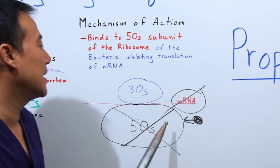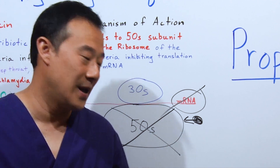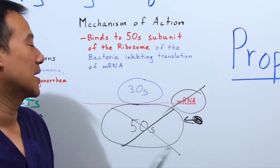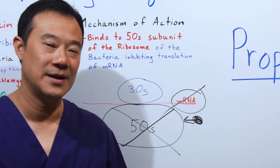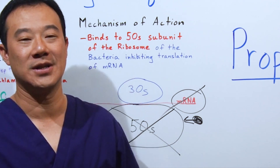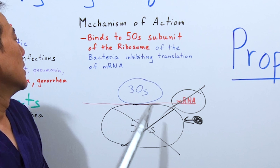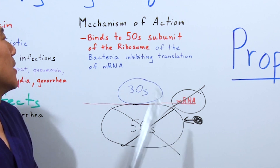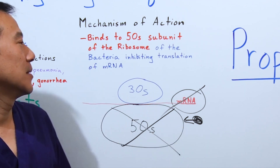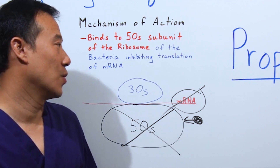If it cannot create mRNA, the bacteria cannot replicate and the infection stops. That's how this antibiotic works.